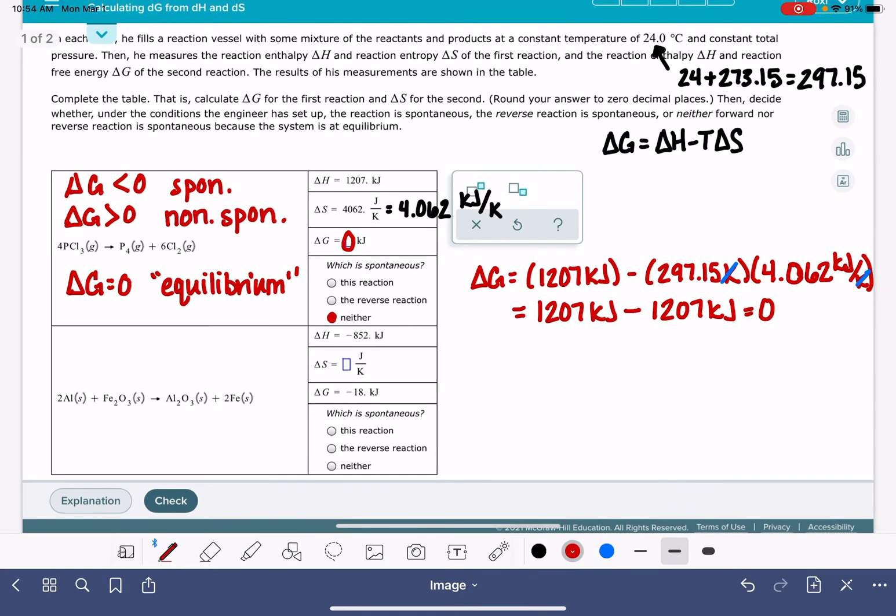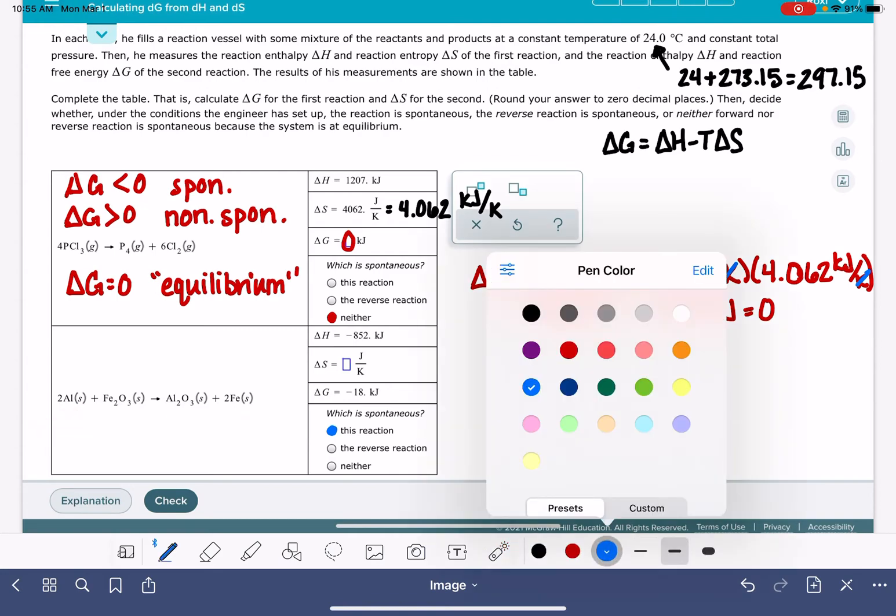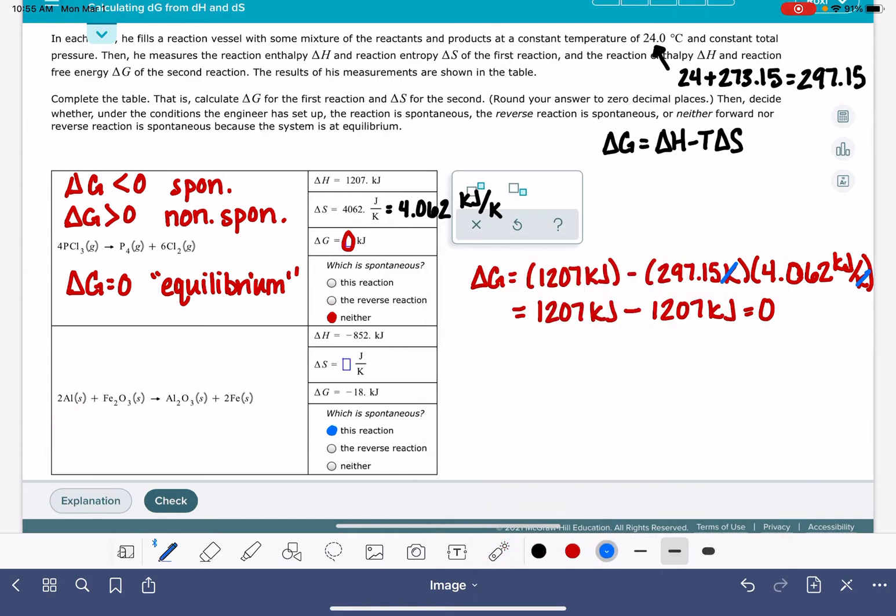Let's try our next problem. In the next problem, we have delta H and we have delta G and we're being asked to calculate delta S. We are being asked again if the reaction is spontaneous. So we're going to base that answer off of the value of delta G. Delta G is a negative number, which means that this reaction is spontaneous. This reaction is spontaneous. The delta G for this reaction is negative 18. The delta G for this reaction would be positive 18. We also need to calculate the value of delta S.